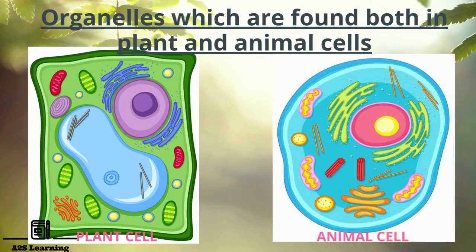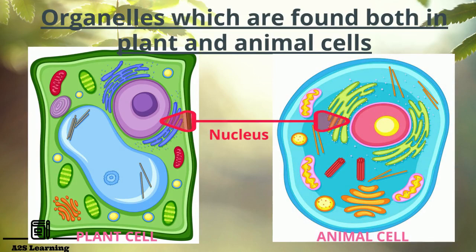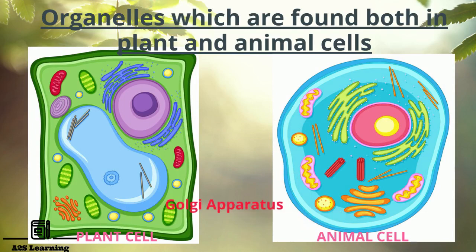To summarize, these are the organelles which are found both in plant and animal cells: cell membrane, nucleus, endoplasmic reticulum, mitochondria, Golgi apparatus and lysosomes.